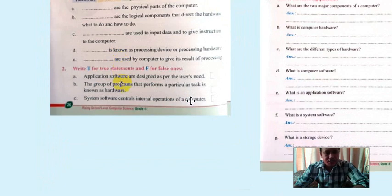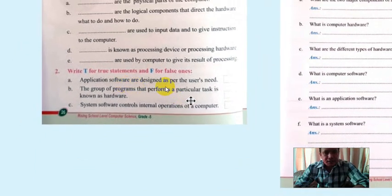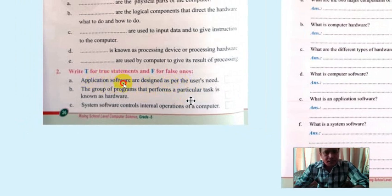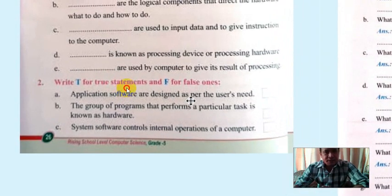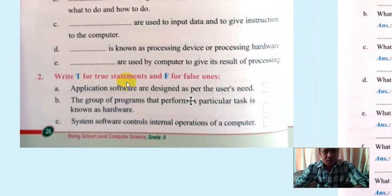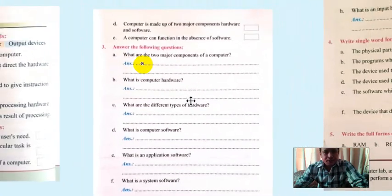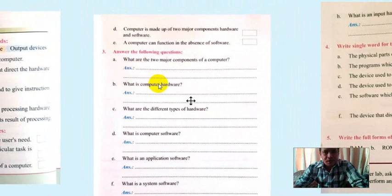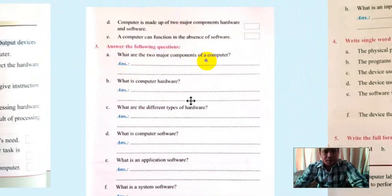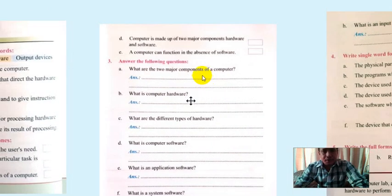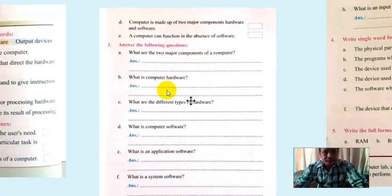For true and false: application software are designed as per the user's need — this is true. System software is fixed and understood by the system, but application software is designed as per our need. You can give your requirements to a programmer or software company and they can design it for you. The major components of the computer are hardware and software.